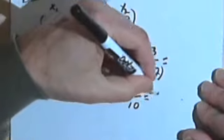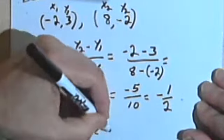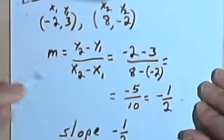Negative 5 over 10, and that equals negative 1 half. So the slope is negative 1 half.